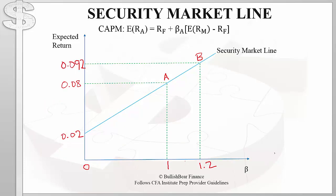Looking at the graph of the security market line — which is just a picture of the CAPM equation — we have expected return on the Y-axis and beta on the horizontal X-axis. This line is the security market line. The graph tells us that when beta is equal to 0, the expected return is 2%, which must be the risk-free rate. Going back to the CAPM equation, when beta equals 0, the expected return is simply the risk-free rate.